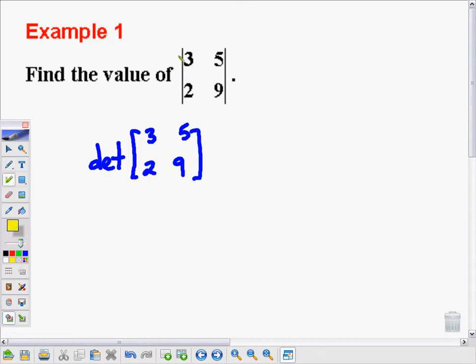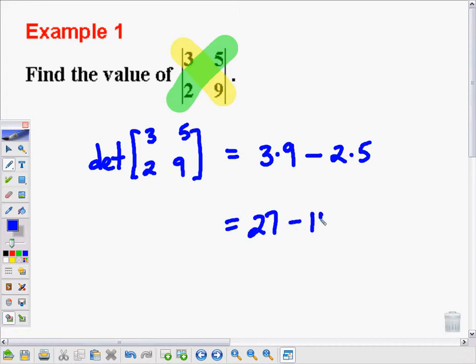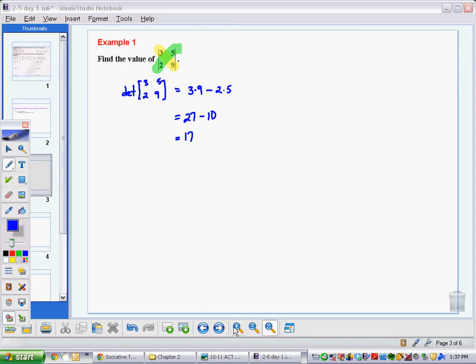The process goes like this. We take the product of these two terms, so I'll do 3 times 9, and I subtract from that the product of these two terms, 2 times 5. So we get 27 minus 10, which equals 17. It's super quick. Let's move to the next example.